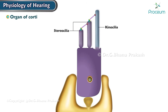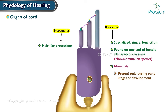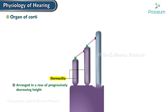Stereocilia and kinocilia: hair cells are named for their hair-like protrusions called stereocilia. Kinocilia, on the other hand, are specialized single long cilia found on one end of the bundle of stereocilia in some non-mammalian species. In mammals, kinocilia are only present during the early stages of development and are later lost as the hair cell matures. Stereocilia are arranged in a row of progressively decreasing height, with the tallest stereocilium at one end and the shortest at the other, connected to each other by fine elastic structures called tip links.